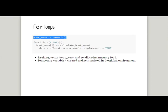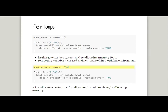Another issue is the iterator variable i — if you look at your global environment in RStudio, you'll notice a temporary variable i being created and updated every time the loop runs. This is generally bad practice because, for example, if you have defined i elsewhere in your code as a discounting variable, it gets redefined by the loop without you knowing.